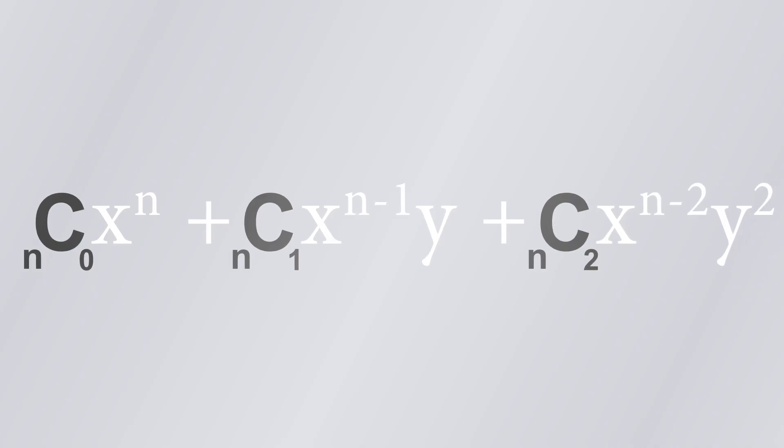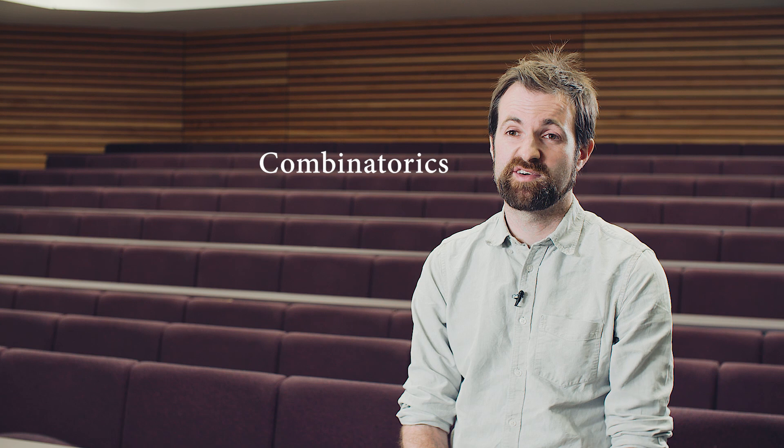The coefficients aren't just theoretical — they have a practical use as well. Binomial coefficients are typically used to find the number of different ways of choosing a certain number of objects from a larger group. This is the mathematics of combinatorics. For example, if you have four people and want to make a team of two, the binomial coefficient tells you there are actually six ways of doing this.